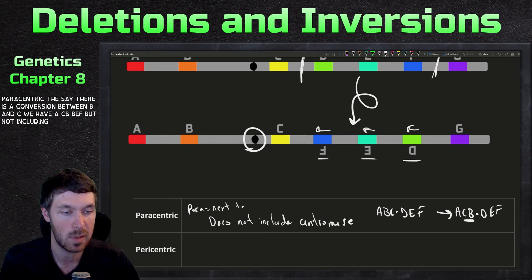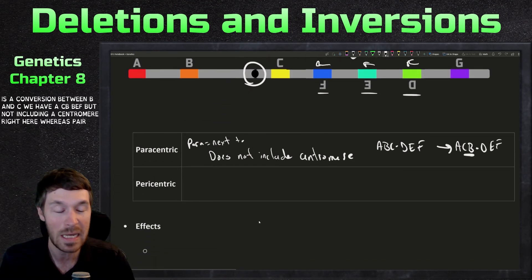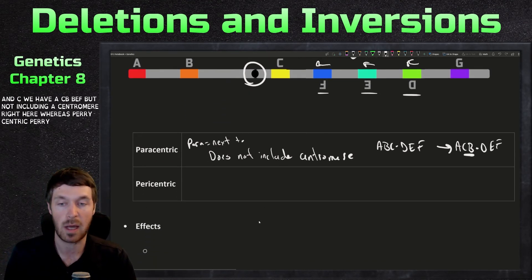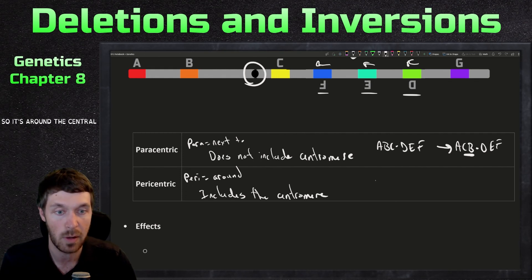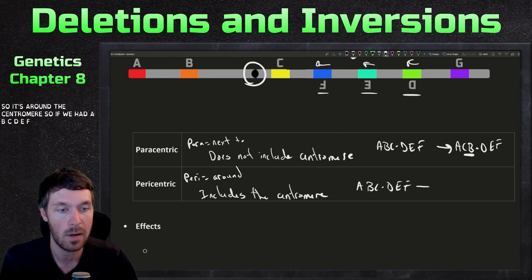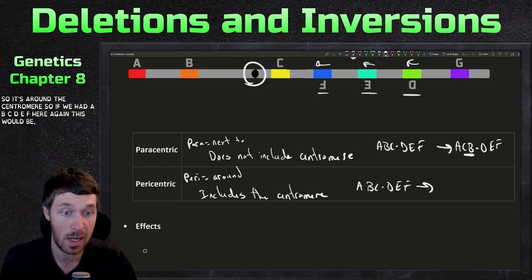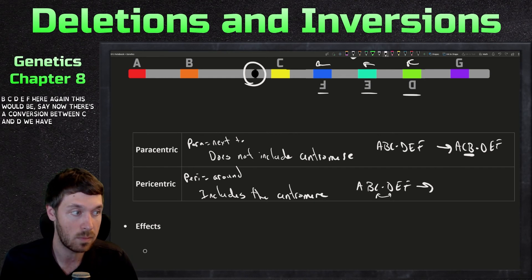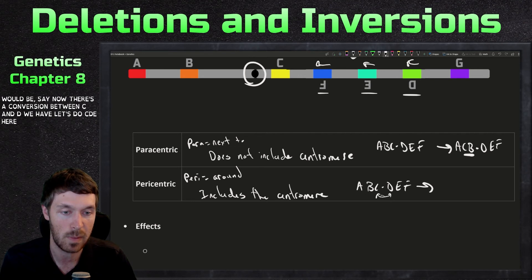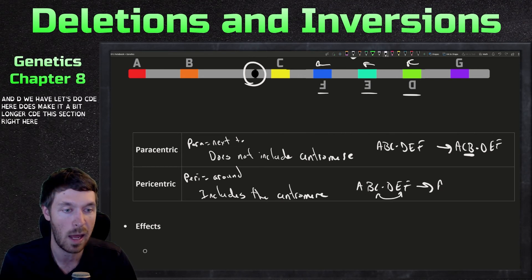Whereas pericentric, peri means around, pericentric includes the centromere. So it's around the centromere. So if we had ABCDEF here again, this would become, let's say now there's an inversion between C and D. We have, let's do CDE here. Let's make it a bit longer. CDE. This section right here, we then have A, B, E, D, C, F as our final result here.